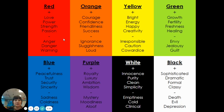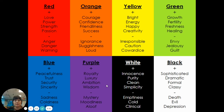Colors also have feelings attached to them. If you think of red, you might think of love, or you might think of anger. If you think of blue, you might think of sadness, but also you might think of peacefulness. So different colors have different emotions.